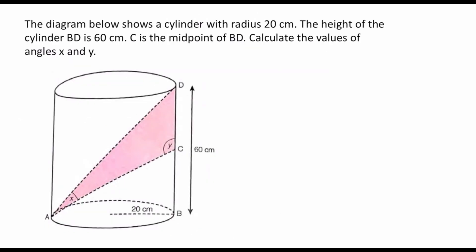The next diagram shows a cylinder with radius 20 centimeters. The height of the cylinder BD is 60, and C is the midpoint of BD — that is super important, because that means CD is 30 centimeters and BC is 30 centimeters. So the fact that C is the midpoint of BD is actually very important. Calculate the values of angles X and Y.